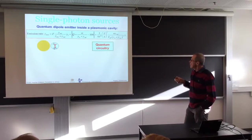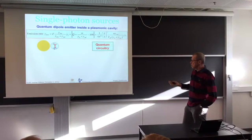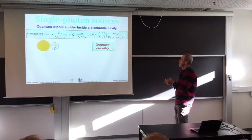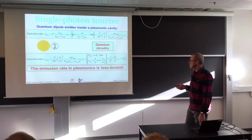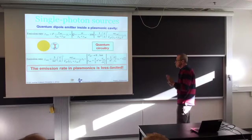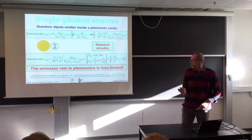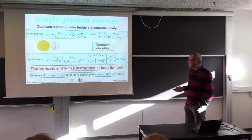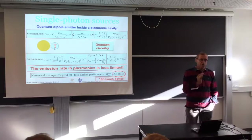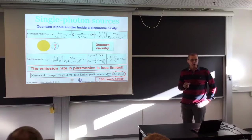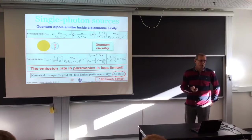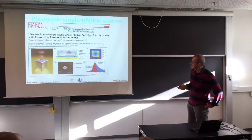You can put everything together and find the limit. In nature, if you do everything correctly, you will find a limit — but now it is loss-limited, not size-limited. When you put in the numbers, you arrive at terabits per second — 100 times better than the dielectric case. This is really the case for plasmonics: it is the justification for trying to realize single photon sources with plasmonics. There have already been some experiments in this direction.